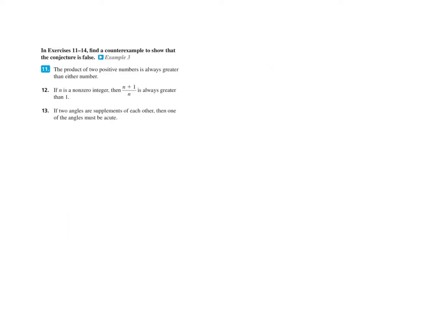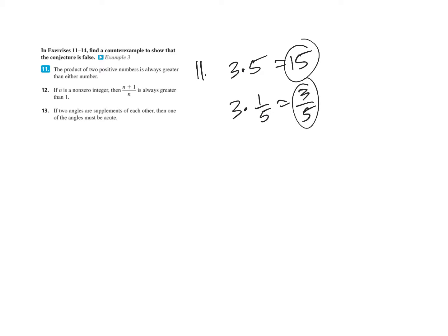Number eleven: find a counterexample to show that the conjecture is false. All you have to do is find one example where it's false. The product of two positive numbers — like 3 times 5 — is always greater than either number. Can we find one that isn't? How about 3 times one-fifth? That gives three-fifths. Is three-fifths bigger than either number? Three-fifths is bigger than one-fifth, but not bigger than three. So there is your counterexample — it proves that's not always true.